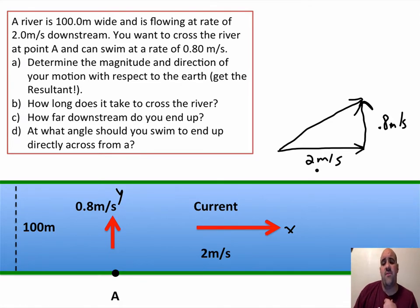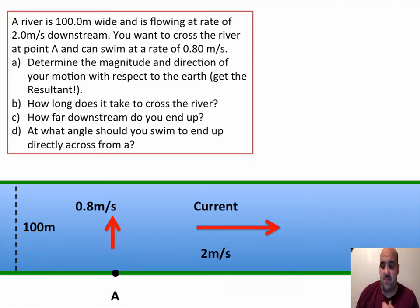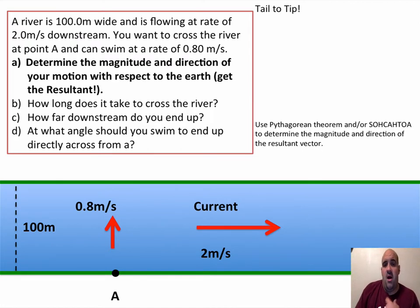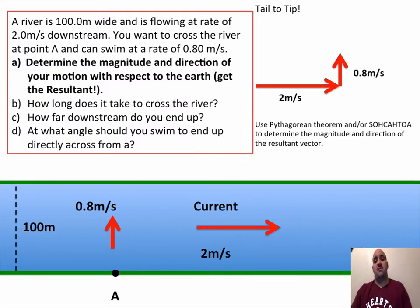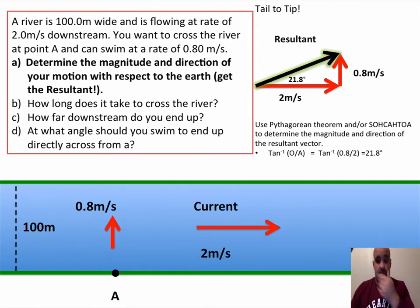The resultant vector goes from the tail of your first vector to the tip of the last vector. We use the Pythagorean theorem to find its magnitude, and inverse tangent to find angle theta — the opposite side is 0.8 and the adjacent side is 2. So inverse tangent of 0.8 divided by 2 gives us 21.8 degrees.